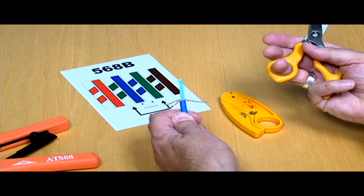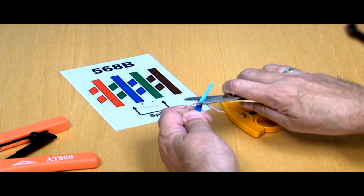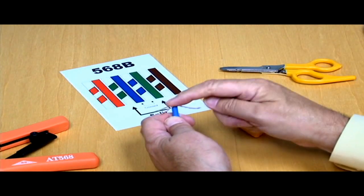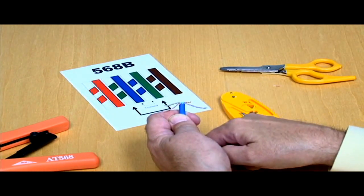But for installing a modular plug, we don't need that spine, so we're going to cut it off. You want to go real low to the base and cut that spine off, but make sure that you don't cut any of the conductors.